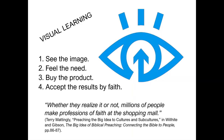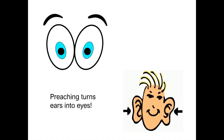We live in an age of visual learning. We can learn a lesson from the advertising media today, as Terry Mattingly points out. Advertisers don't just tell us what they want to say — they show us through images what they want us to see. The advertising model works like this: see the image, feel the need, buy the product, accept the results by faith. Mattingly writes, whether they realize it or not, millions of people make professions of faith at the shopping mall. We want to turn ears into eyes. We must capture the listener's attention by what he hears, but he will remember what he sees in his mind.